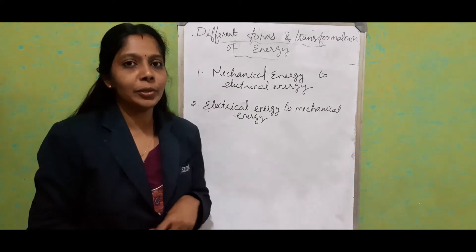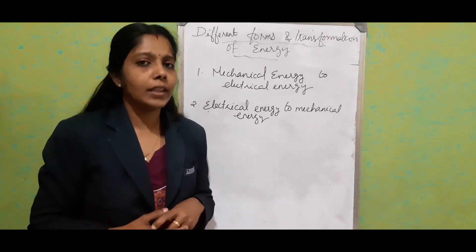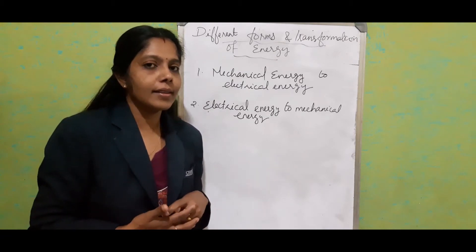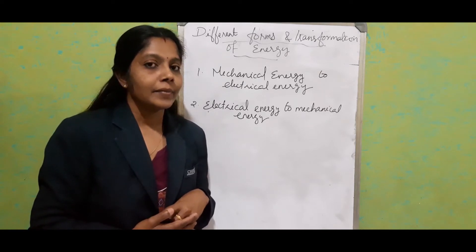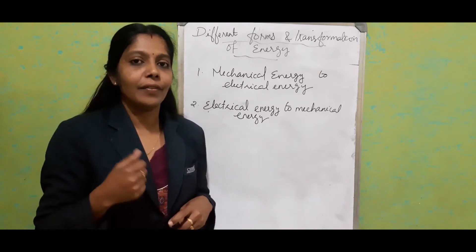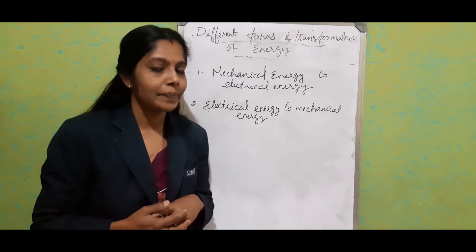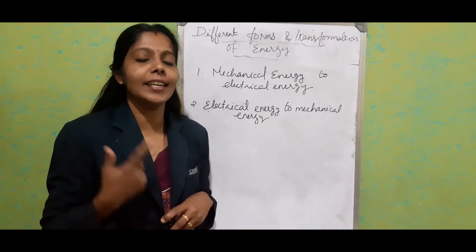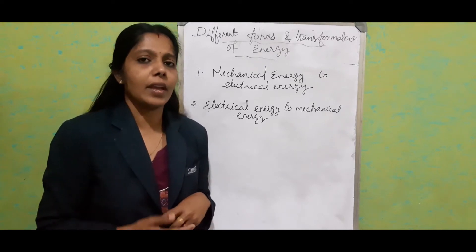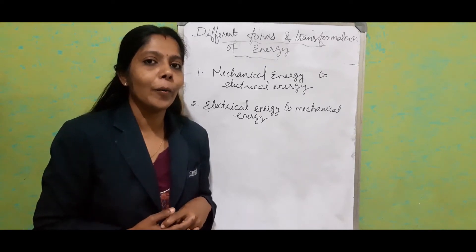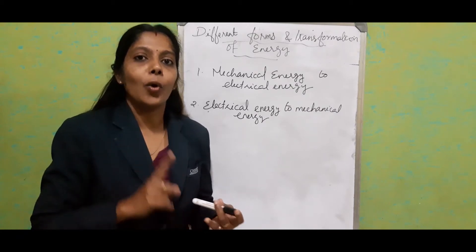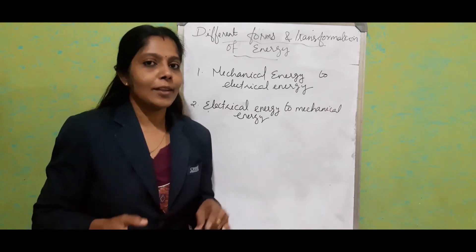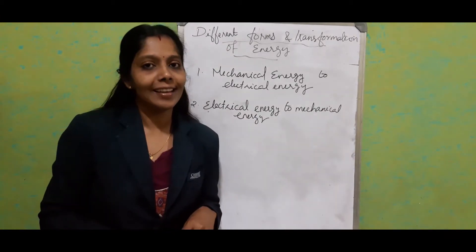Second one: electrical energy to mechanical energy. In our house, we cannot imagine life without electrical energy. A very common example is a fan. For the fan to work, it requires electrical energy, and the output we get is the fan rotating — that is movement, or kinetic energy. All the motors we use at home — the motors for mixer, grinder, washing machine — the final output is rotation, or mechanical energy. These are examples of conversion of electrical energy to mechanical energy.